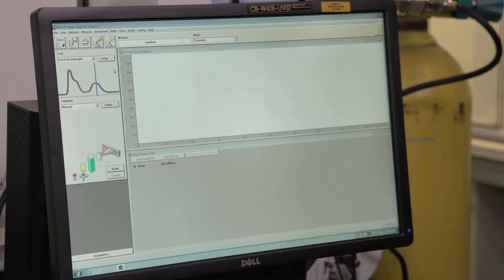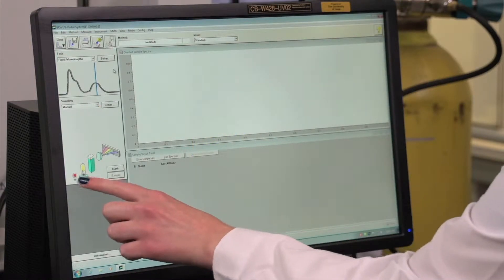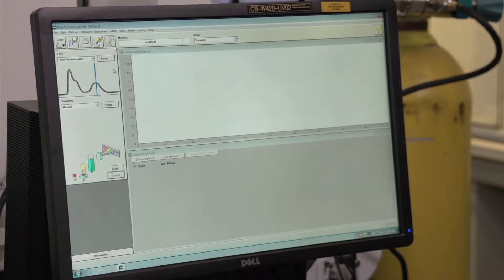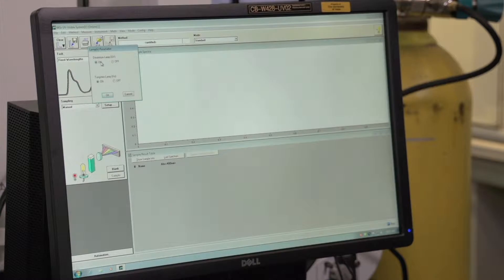To ensure that your lamps are on, you can look at this little picture, and if they're both lit up then that means both lamps are on. But in the event that they are not on, you can go to instrument, lamps, and then check that both the deuterium and the tungsten lamps are on.